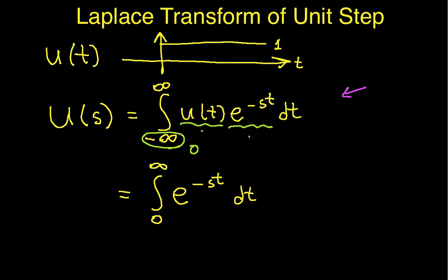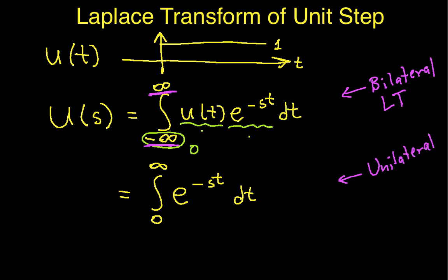The integral defined with limits from minus infinity to infinity is the bilateral Laplace transform. The integral with limits from 0 to infinity is the unilateral Laplace transform. The reason these are the same here is that U of t is a function that's 0 for values of t less than 0. So for the unit step function, the bilateral Laplace transform and the unilateral Laplace transform are the same thing. In general, this is true for any signal that is 0 for values of t less than 0.